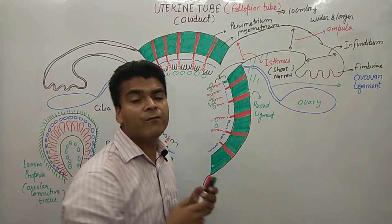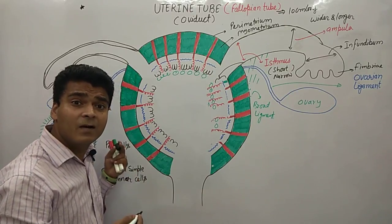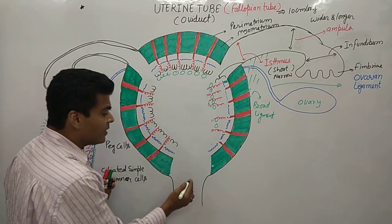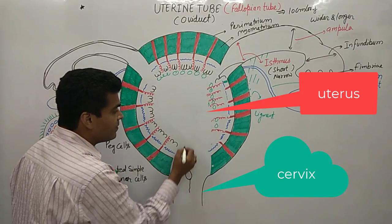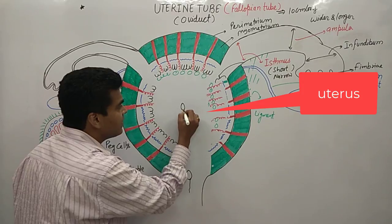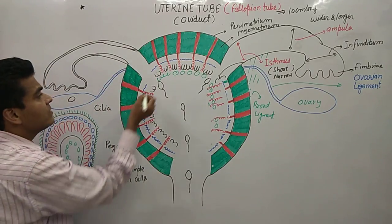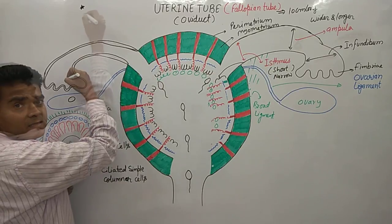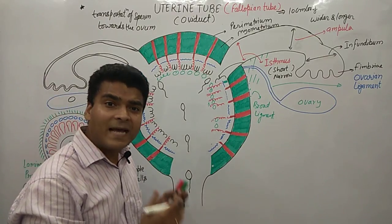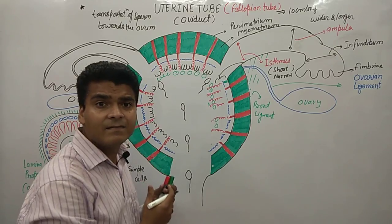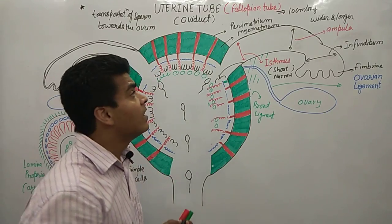The function of the fallopian tube is the transport of sperm towards the ovum. The fallopian tube provides a passage for this transportation. The uterine tube or fallopian tube is the area where fertilization will occur.